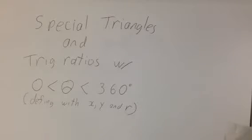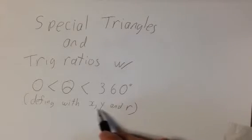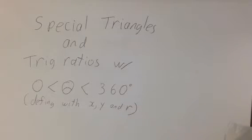We're looking at special triangles and trig ratios of angles between 0 and 360 degrees. To get trig ratios of angles greater than 90 degrees, we define the trig ratios using x, y, and r, instead of the traditional opposite, hypotenuse, and adjacent.